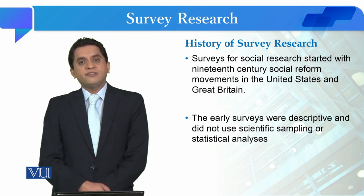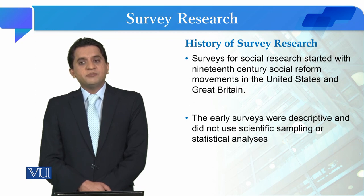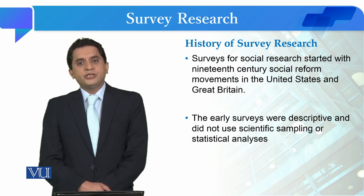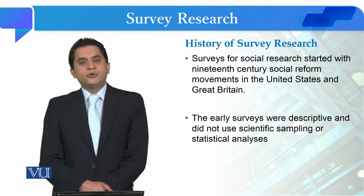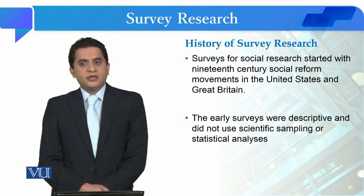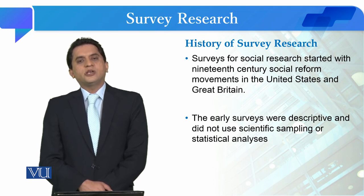In early survey research, no scientific sampling was conducted. The method used was that social scientists would interview people about various social issues and social problems and analyze them in a descriptive narrative form. No probability theory was followed for selection, nor was any sampling frame developed.